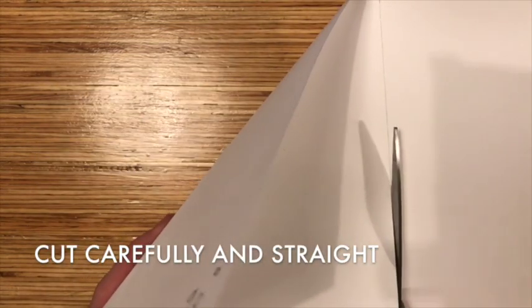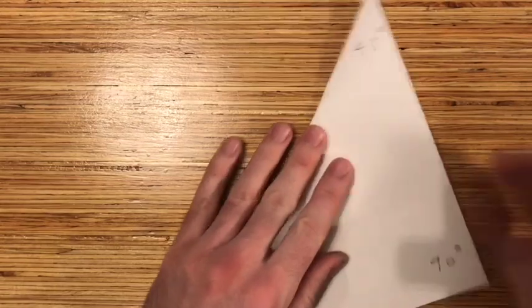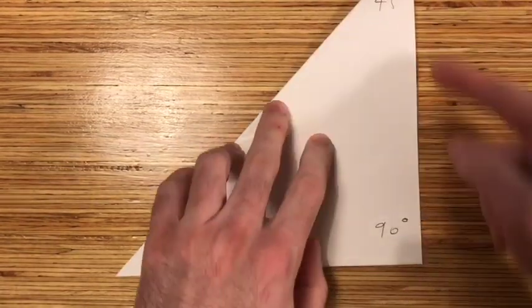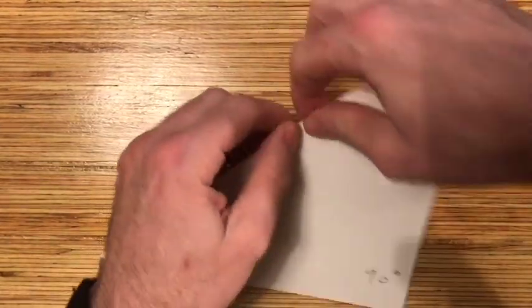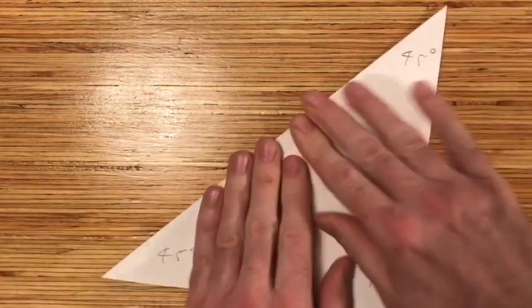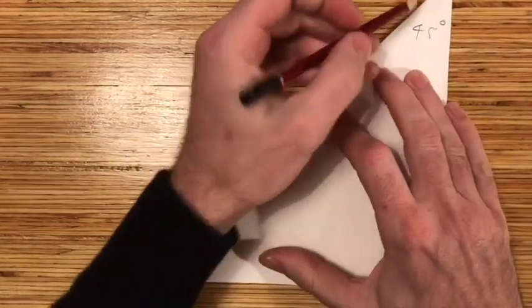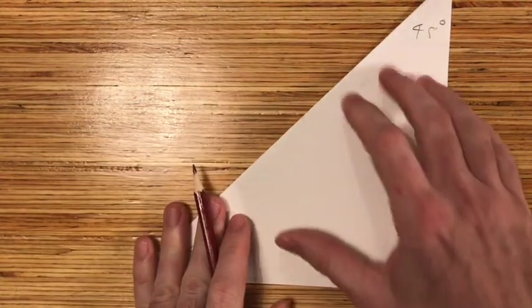I want this edge to be straight as well, just in case I need to draw using this edge. Just make sure bits don't stick out. I'm going to make sure that's really creased because that's the edge I'm going to use to draw with.